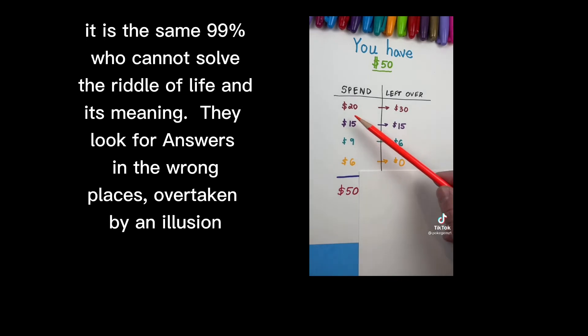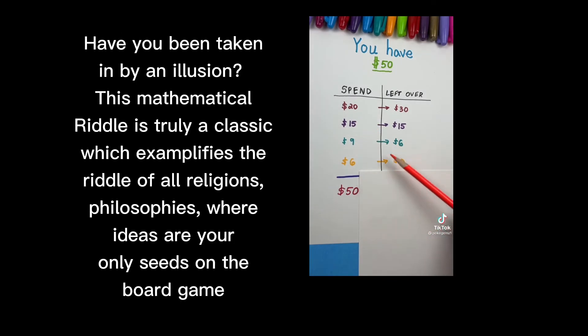So let's go ahead and add these up together. $20 plus $15 plus $9 plus $6 is $50, right? How about this? $30 plus $15 is $45 plus $6 is $51.